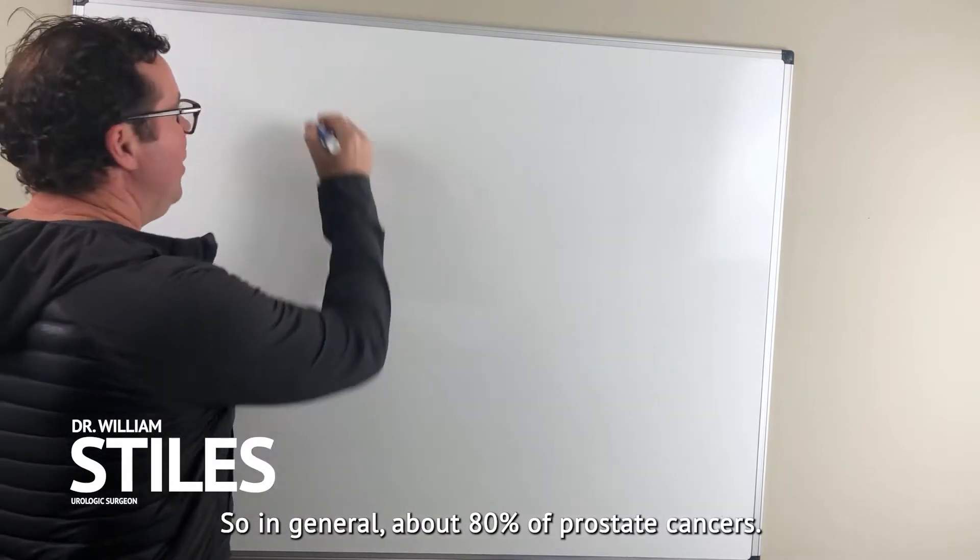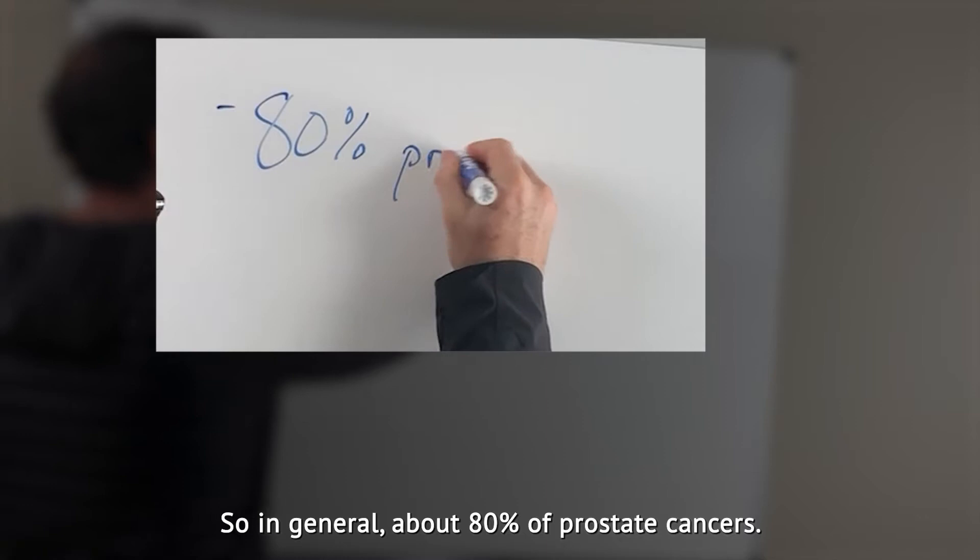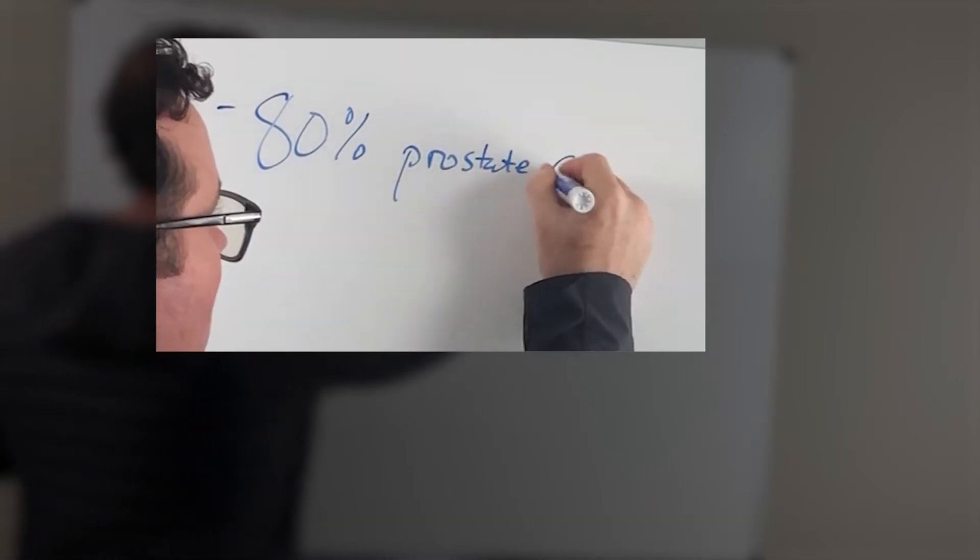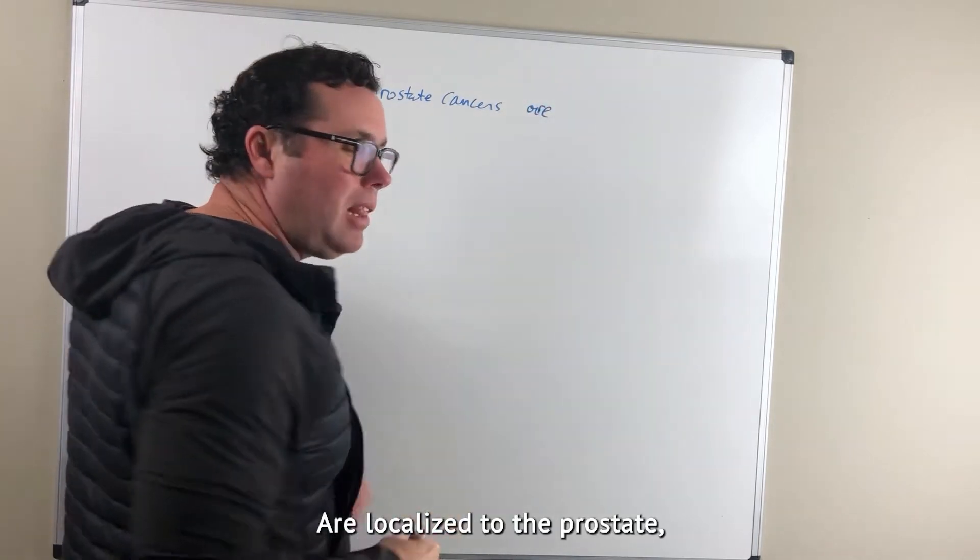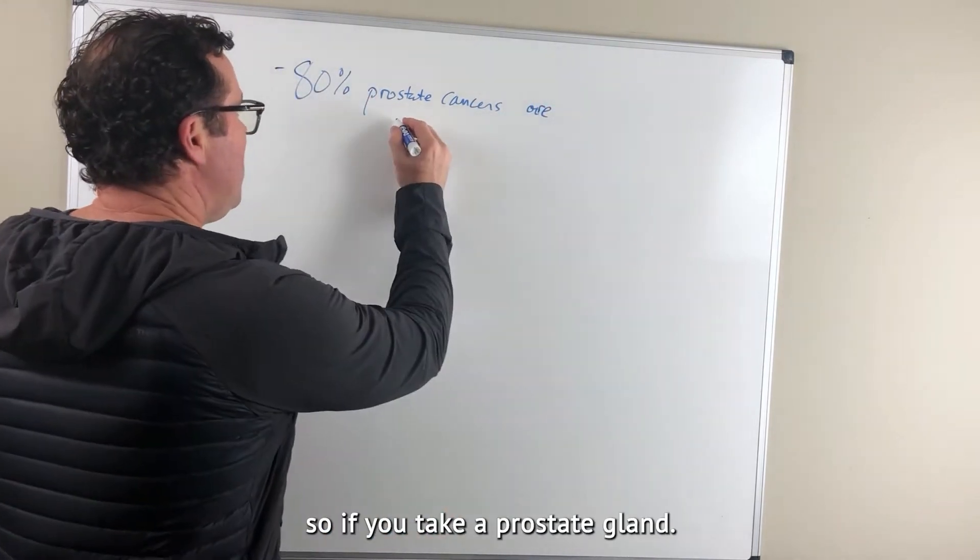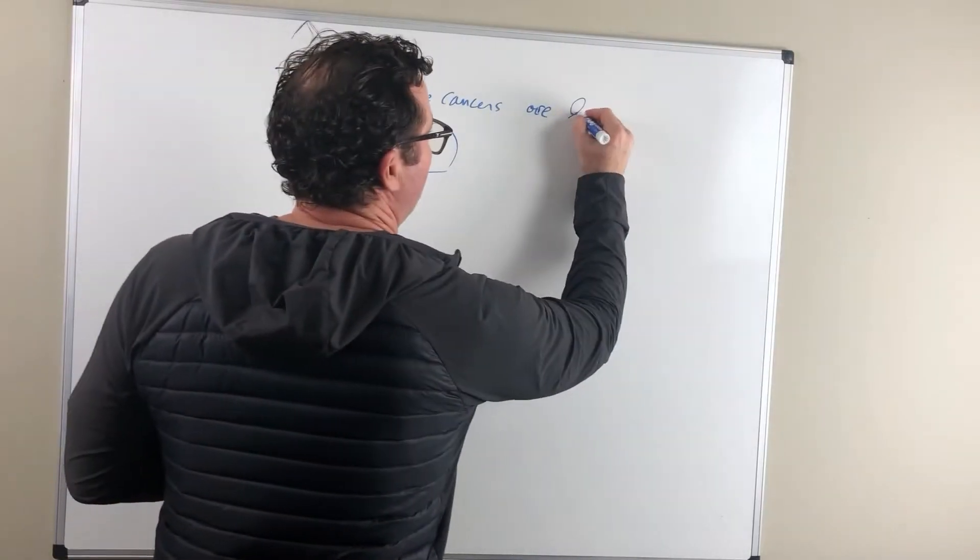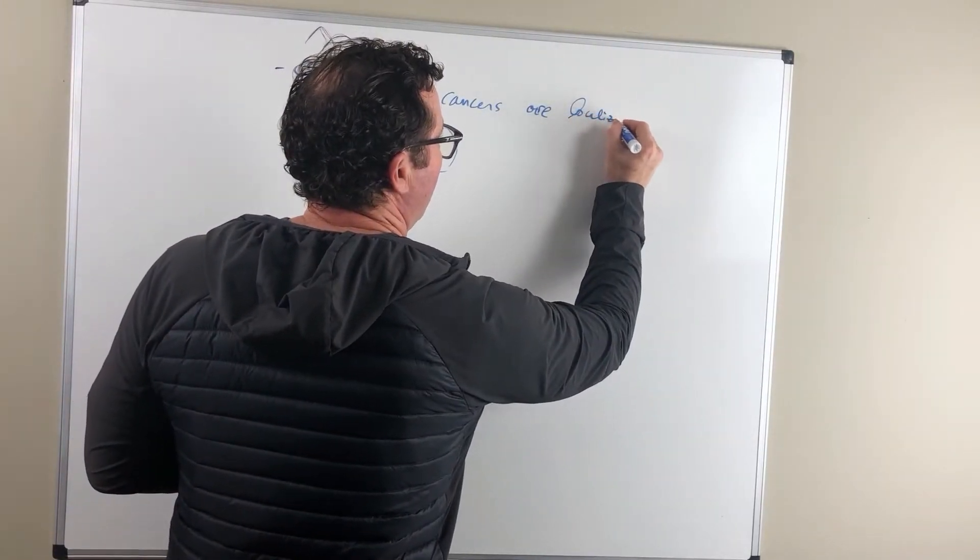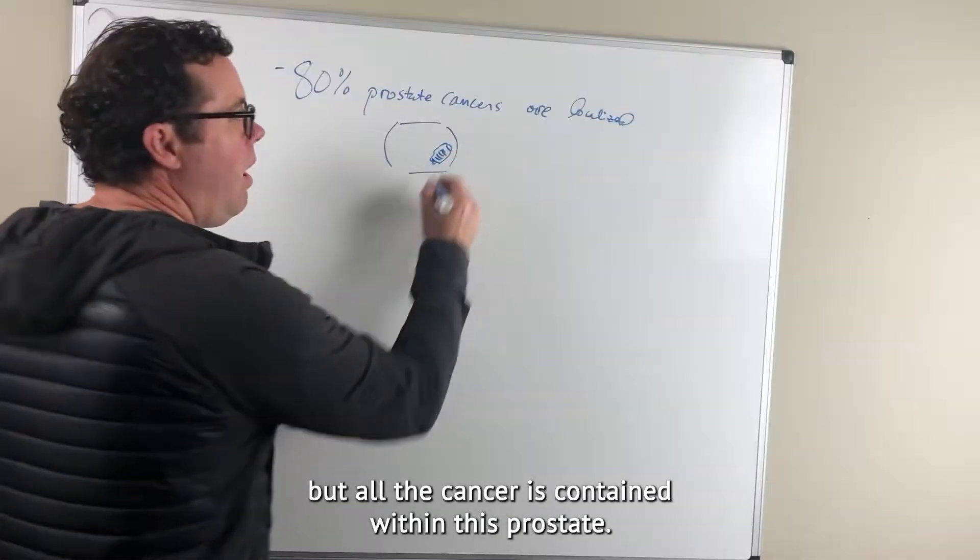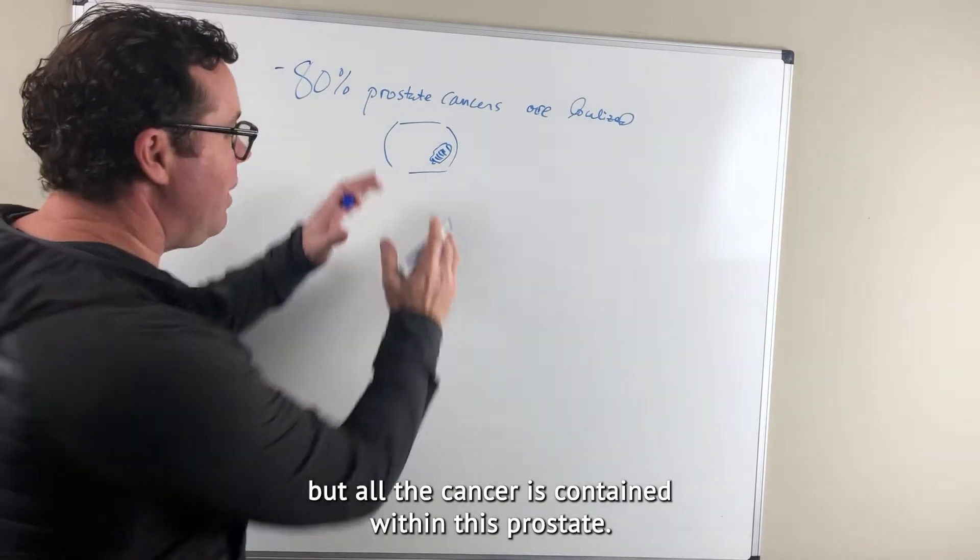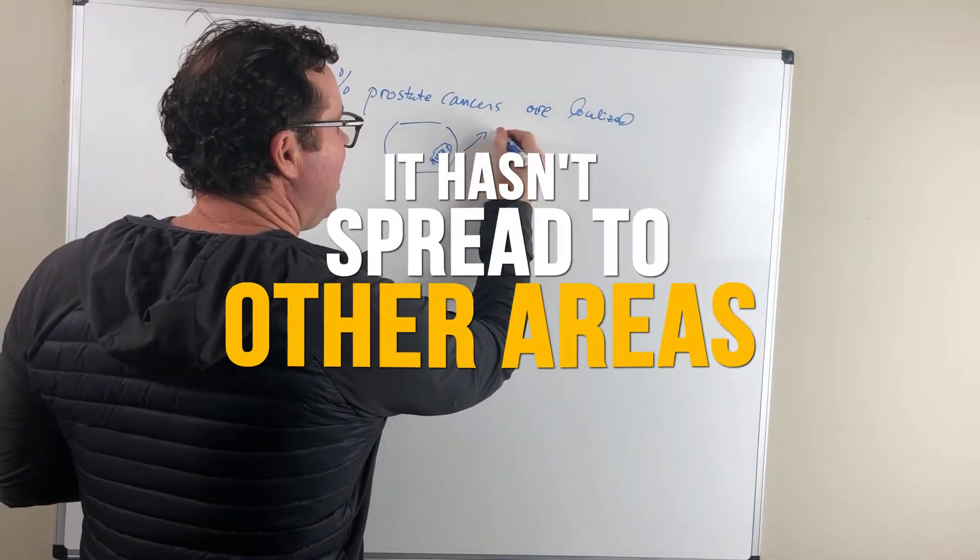In general, about 80% of prostate cancers are localized to the prostate. If you take a prostate gland, there's a cancer there, but all the cancer is contained within this prostate. It hasn't spread to other areas.